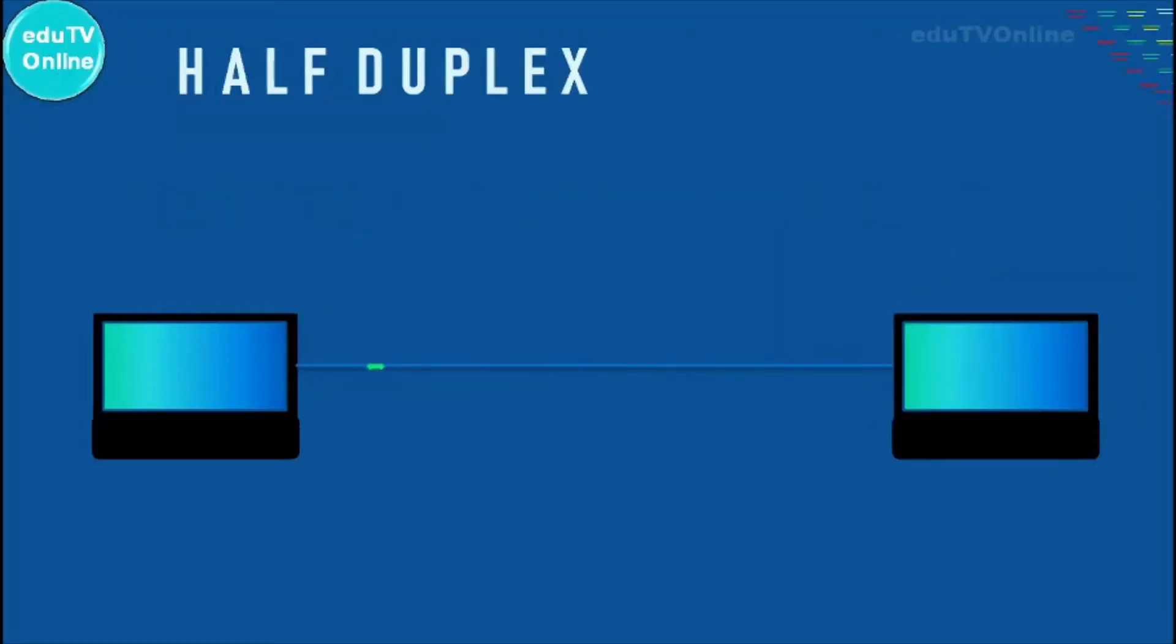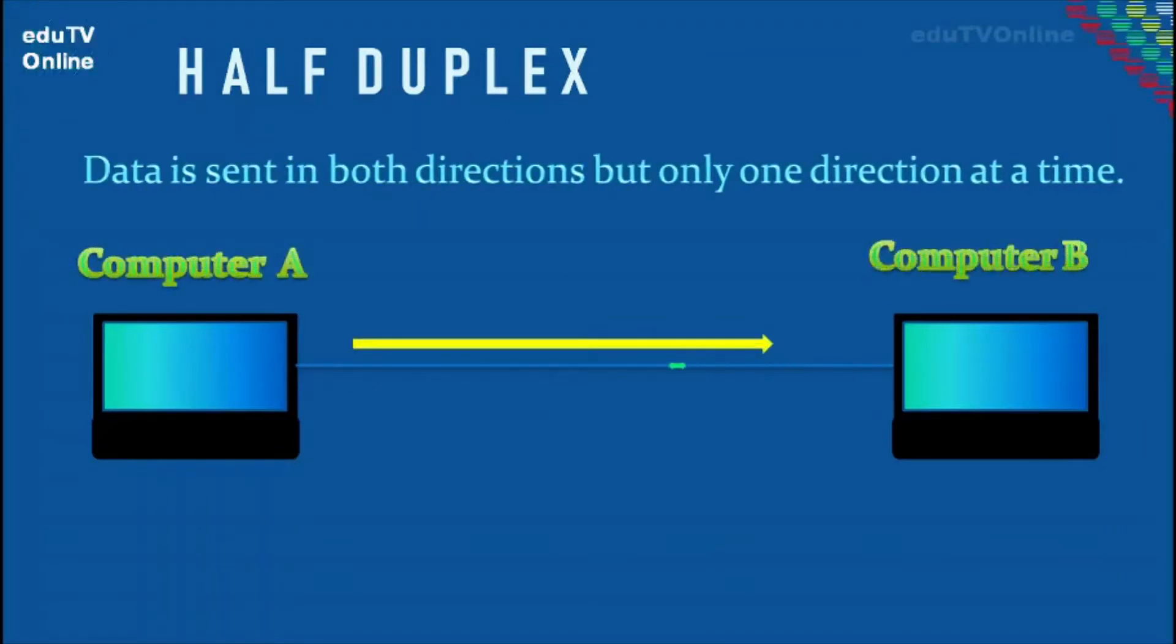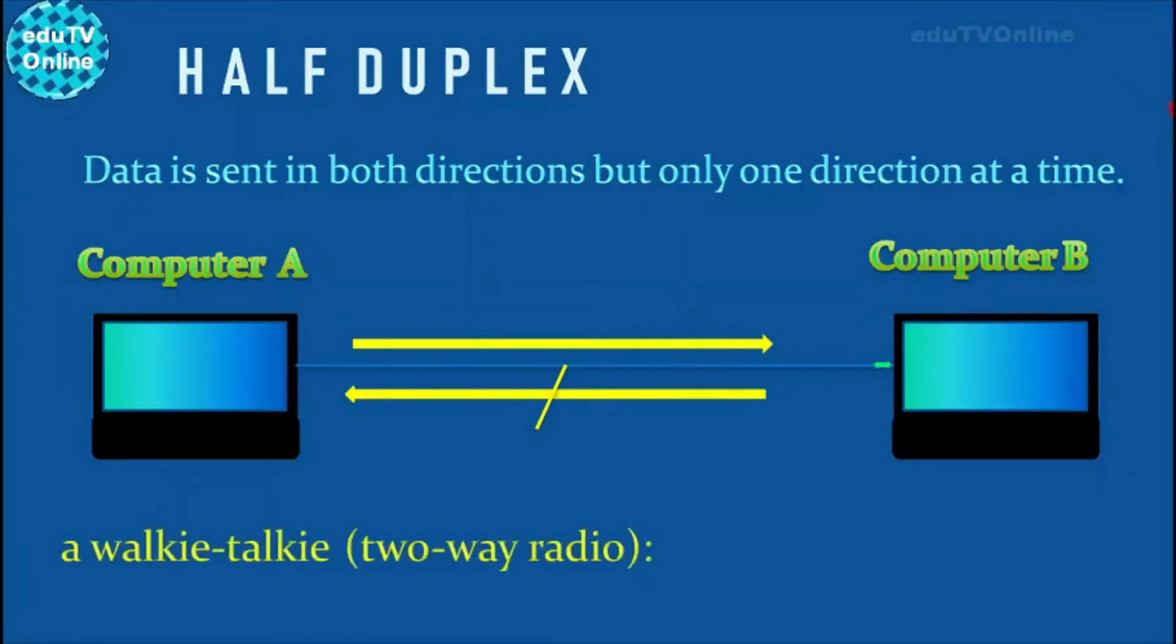In half duplex transmissions, data is sent in both directions but only one direction at a time. So if computer A is sending data to computer B, computer B has to wait until computer A is done before it can send data to computer A. So data flows in one direction at a time.